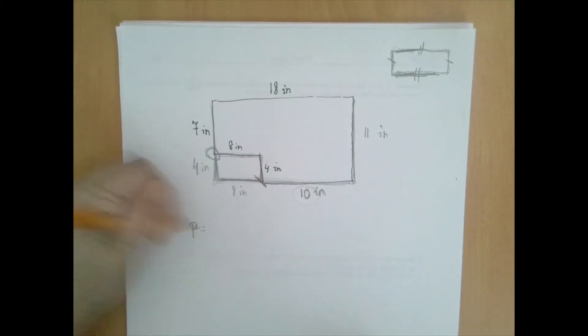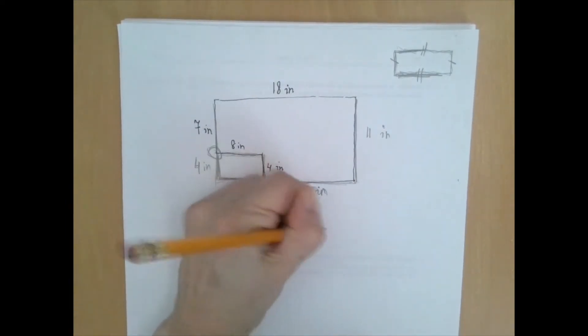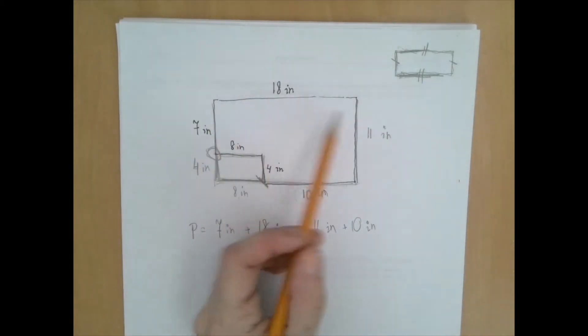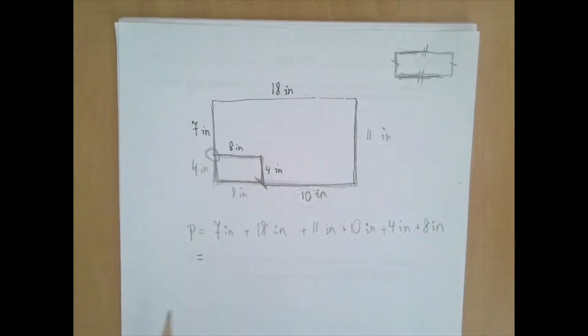So the perimeter is 7 inches plus 18 inches plus 11 inches plus 10 inches. So 7, 18, 11, 10 plus 4 inches plus 8 inches. And so to find the perimeter, we just add all these numbers.